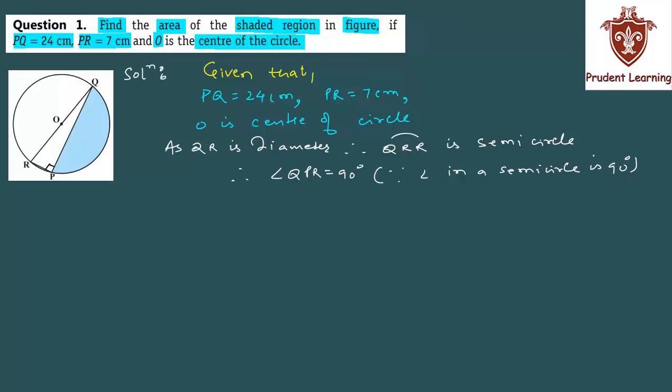And now the question becomes quite easy. How will we solve the question? Let me explain the complete strategy. You can pause the video and try to solve it yourself. To find the area of the shaded region, we will first find the area of this semicircle. And from the semicircle's area, we will subtract the area of this triangle QPR. Then you will get the area of the shaded region.